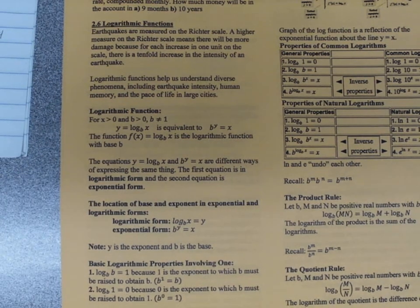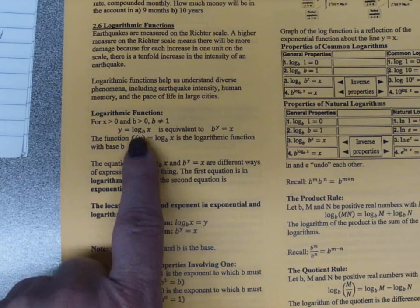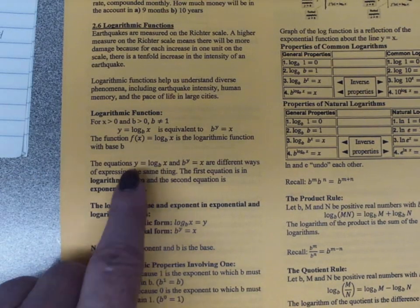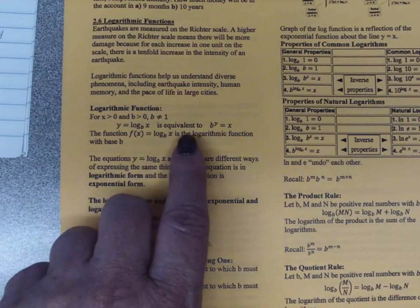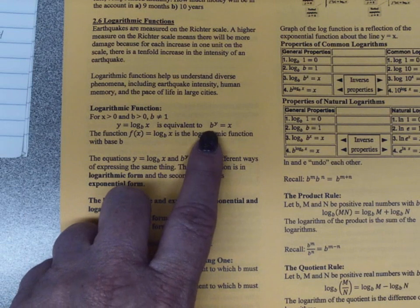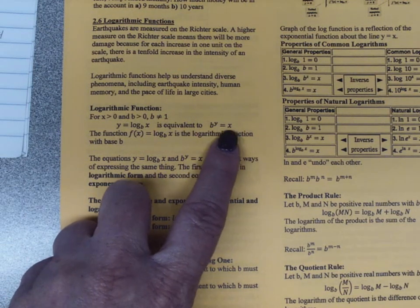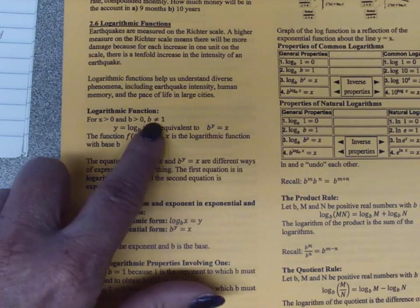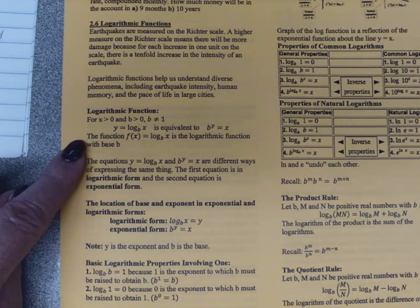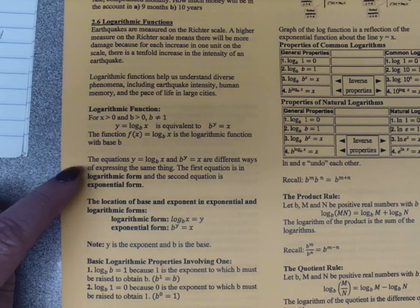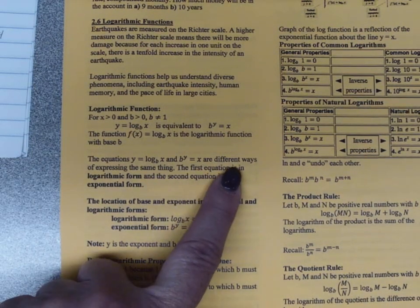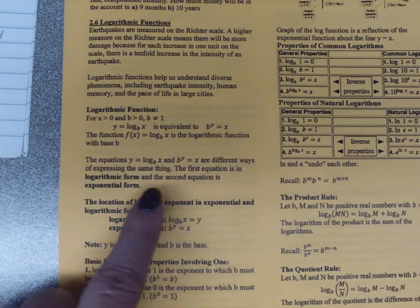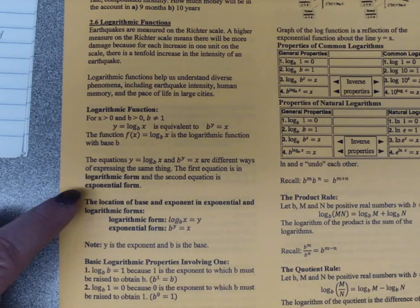For a logarithmic function, for x greater than 0 and b greater than 0, where b can't equal 1, y is equal to the log base b of x. This is equivalent to b to the y equals x, which is the exponential form. The function f of x equals log base b of x is the logarithmic function with base b. These two equations are different ways of expressing the same thing — the first is logarithmic form, the second is exponential form.